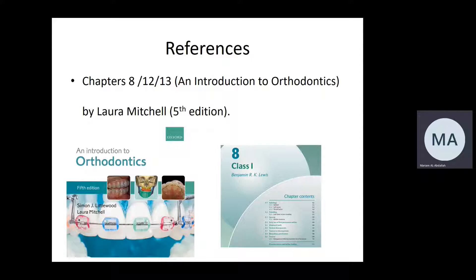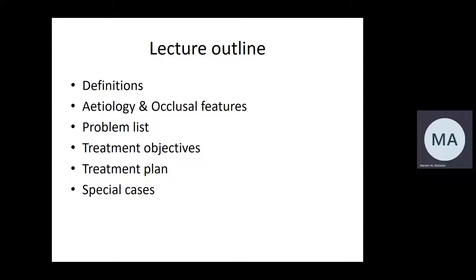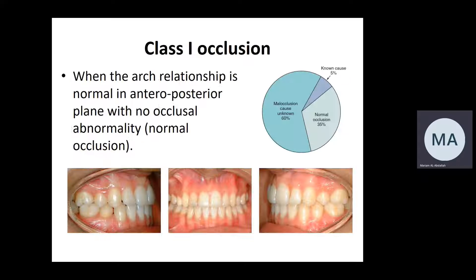Don't worry, each chapter is like 10 to maybe 15 pages or even less. For class 1 malocclusion, we're going to go through some definitions, etiology of class 1 malocclusion, occlusal features, how to write a problem list, how to come up with treatment objectives, what treatment plans we have for this malocclusion, and some special cases related to this type.